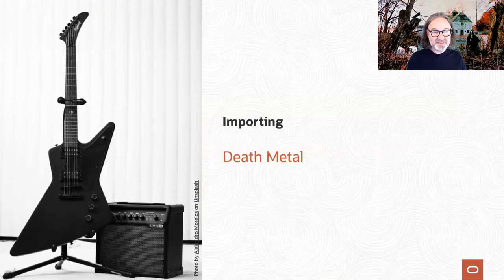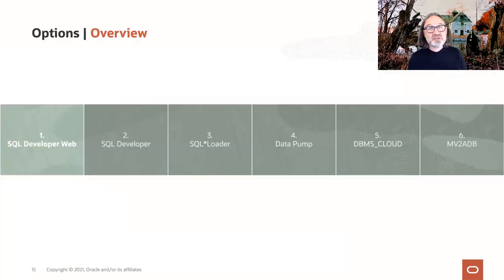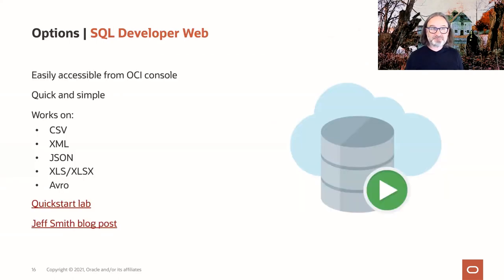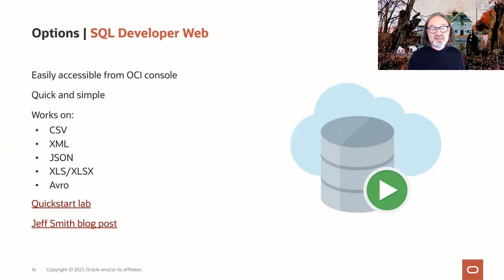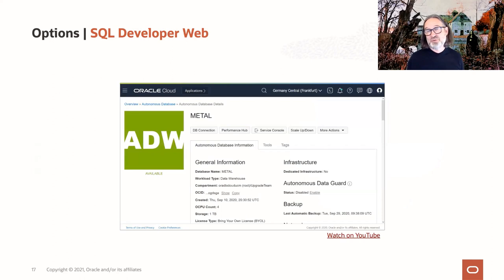We have a Metal dataset we'd like to import. We'd like to show you the different approaches to import the same dataset. The first approach uses SQL Developer Web, which is easily accessible from the OCI console — no installation needed. It's quick, simple, and straightforward. It works with CSV, XML, JSON, Avro files, and even Excel sheets.